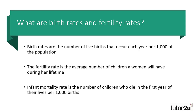A third measurement which helps us to explain some of the changes in birth rates and fertility rates is the infant mortality rate. This is the number of babies that do not survive their first year, again per 1,000 of the population. This too is measured as a rate, as in larger populations sadly more children will die before their first birthday.